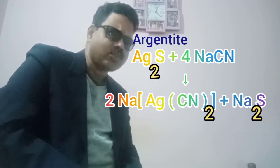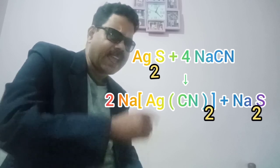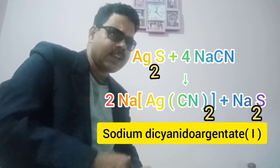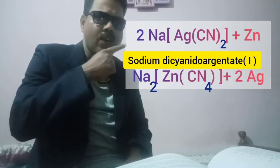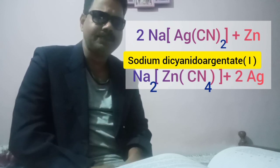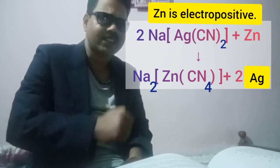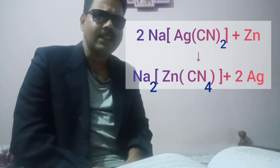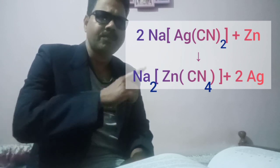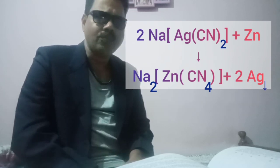Now let us extract silver from argentite, Ag₂S. Ag₂S on treatment with sodium cyanide gives Na[Ag(CN)₂], known as sodium dicyanoargentate(I). This complex is present in solution. Silver can be recovered from that solution by treating with zinc, which forms a soluble complex Na₂[Zn(CN)₄] — sodium tetracyanozincate(II) — and silver is precipitated out in pure form.